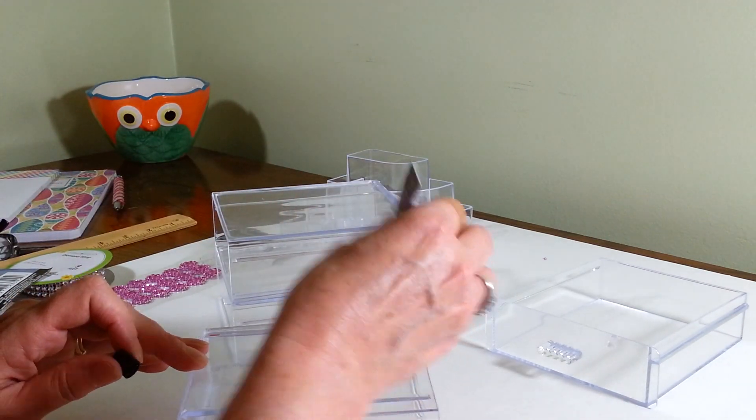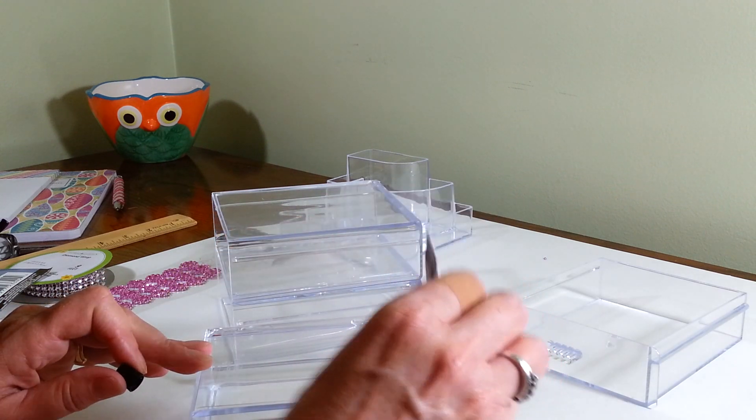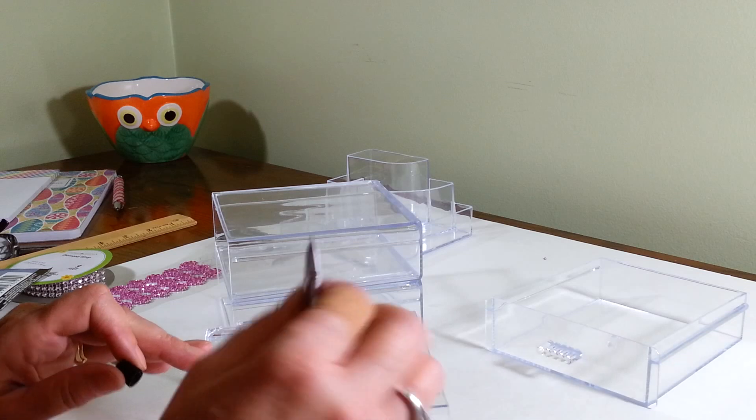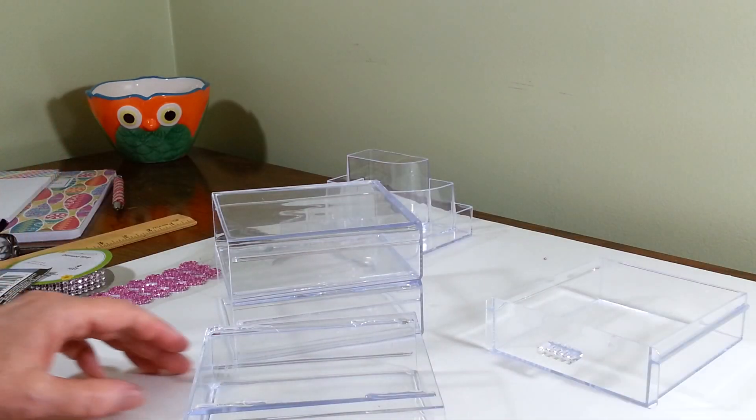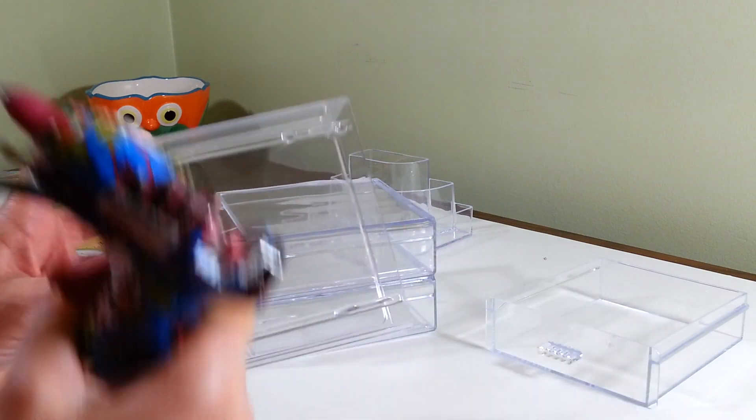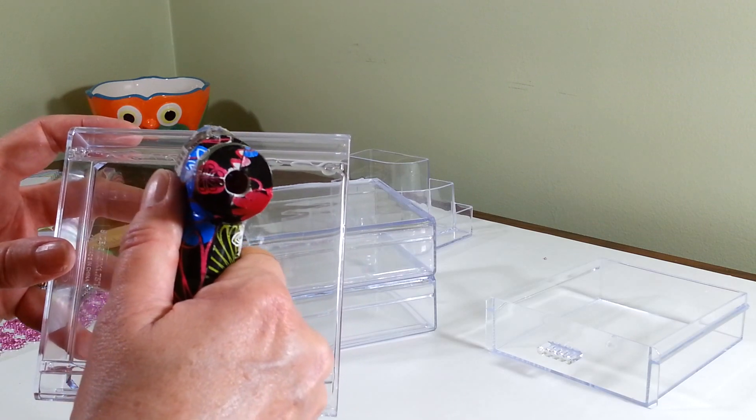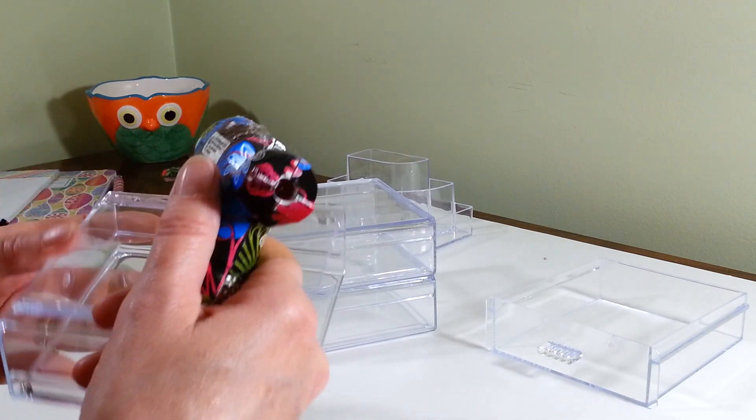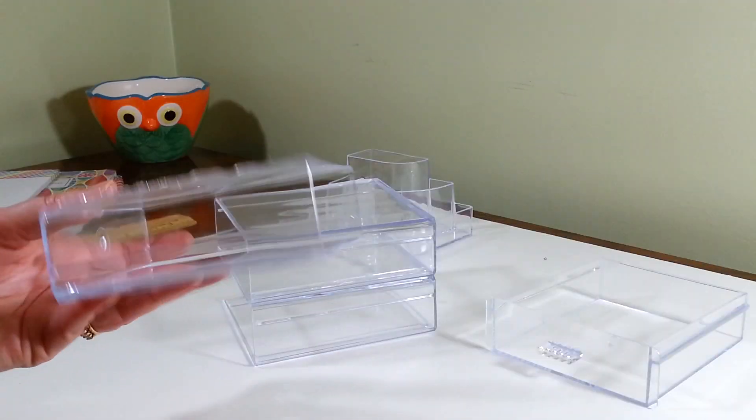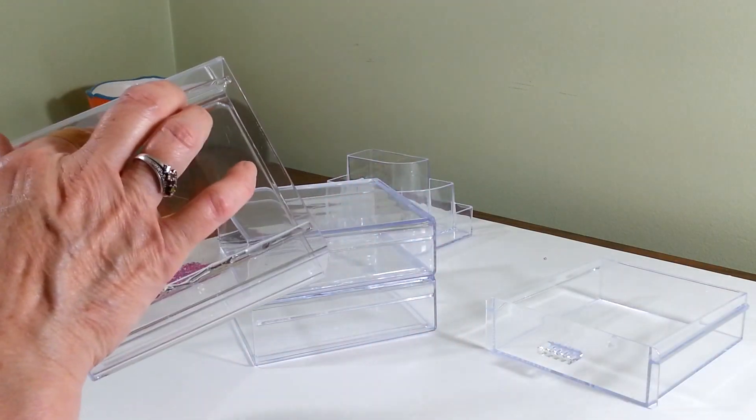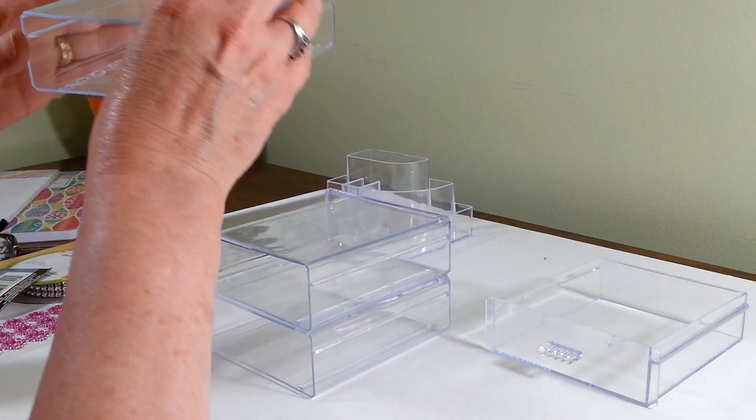I placed E6000 on these little ridges on the bottom where they fit together nicely, and then I'm going to in between just put a little hot glue. You always want to make sure your little lip for the drawer is on the top, so we're just going to set that down on there.